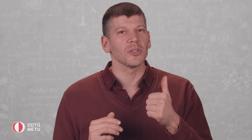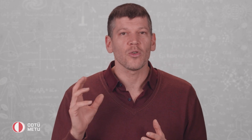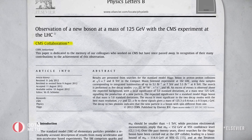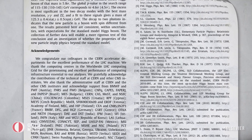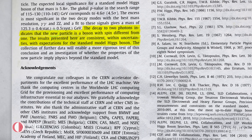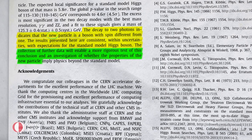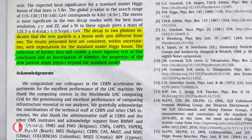The CMS experiment observed the Higgs boson in numerous fermionic and bosonic decay channels, established its spin parity quantum numbers, determined its mass, and measured its production cross-section in various modes. Just after this experiment, the CMS collaboration published a paper announcing their discovery. The decay of two photons indicated that the new particle is a boson with a spin different from one. The results presented are consistent, within uncertainties, with expectations for the Standard Model Higgs boson.